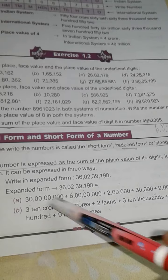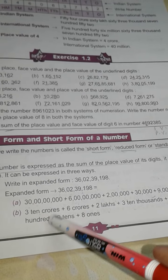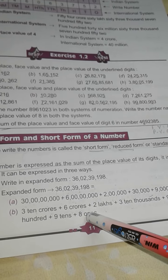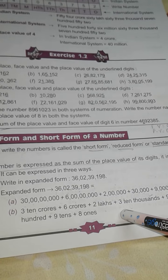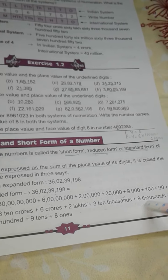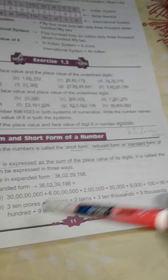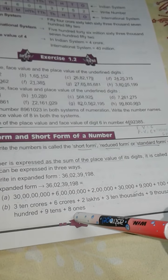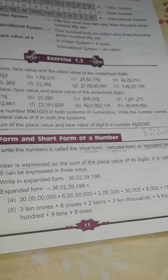30 crores, then 6 crores, 2 lakhs, 3 ten thousand, 9 thousand, plus 100, plus 9 tens, plus 8 ones.